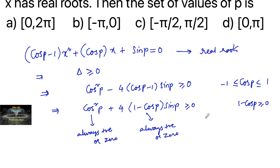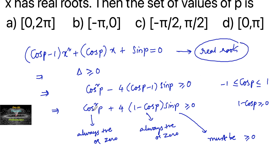Since cos²p ≥ 0 and 4(1 - cos p) ≥ 0, for the sum to be ≥ 0, sin p must be greater than or equal to 0 to satisfy this inequality and have real roots. So to satisfy this inequality, sin p must be greater than or equal to 0.